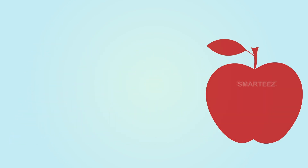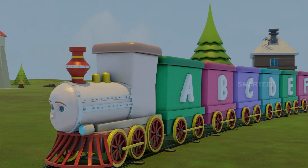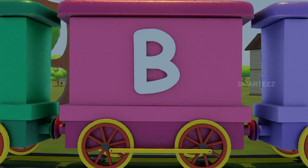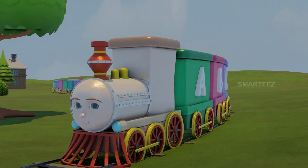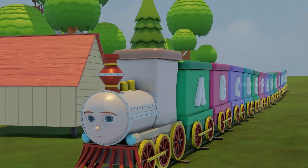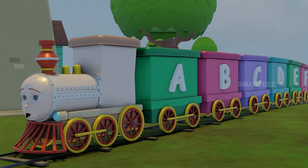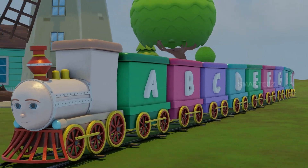A. This is A. A sounds 'ah', like apple. B. This is B. B sounds 'buh', like boy. C. This is C. C sounds 'kuh', like cat.